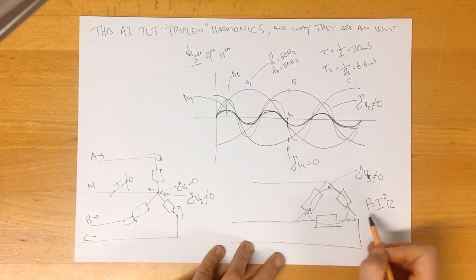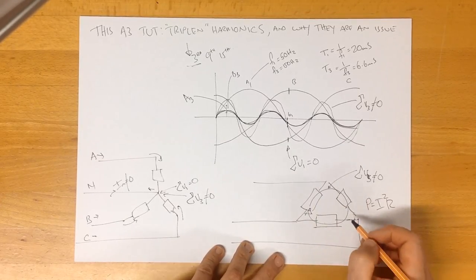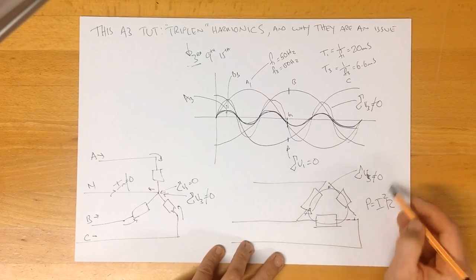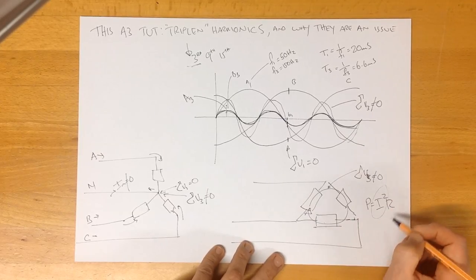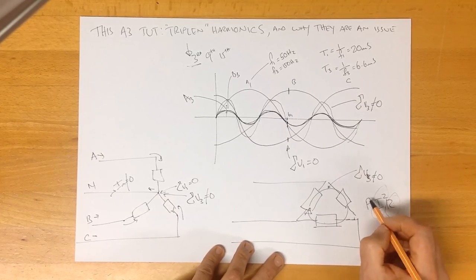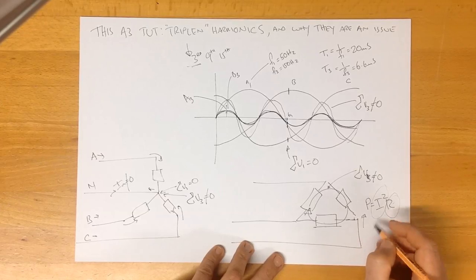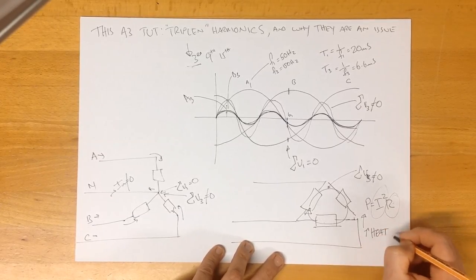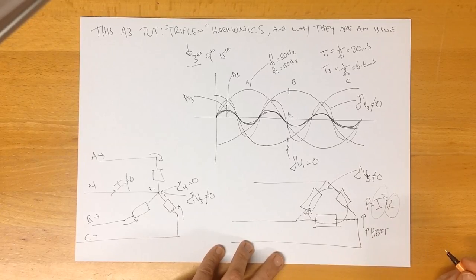We've got a circulating current. It's not going anywhere. The end result is that all of our triplens are circulating. We've got a circulating current times the impedance of our load. So therefore, our power loss goes up, which means we have increased heating in our system waste heat.